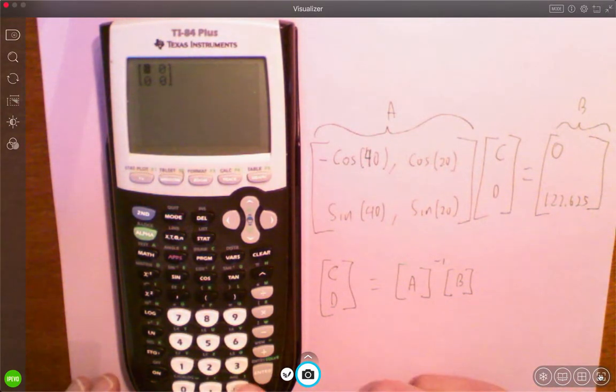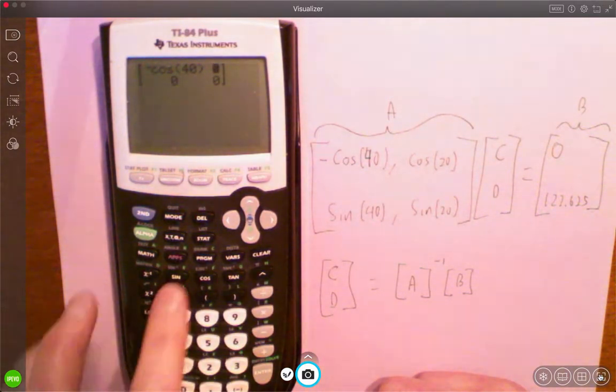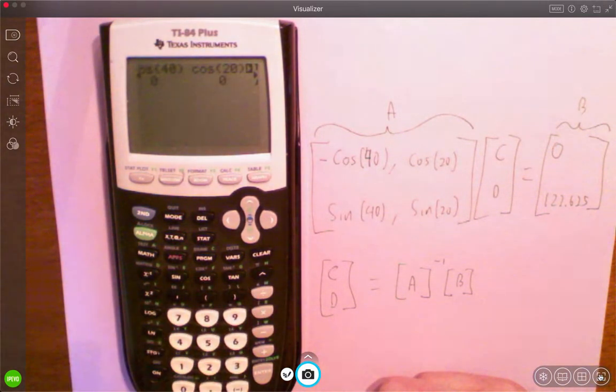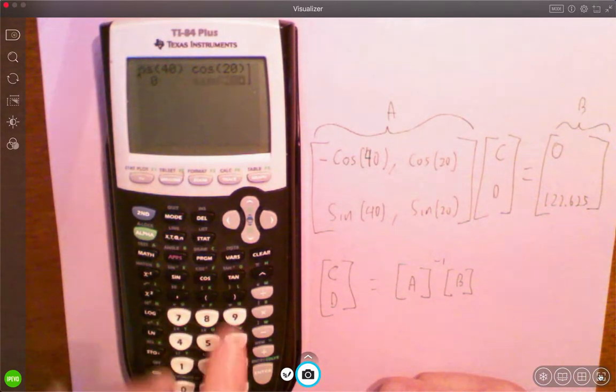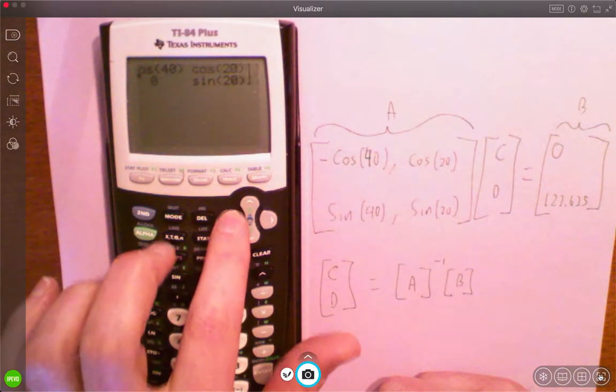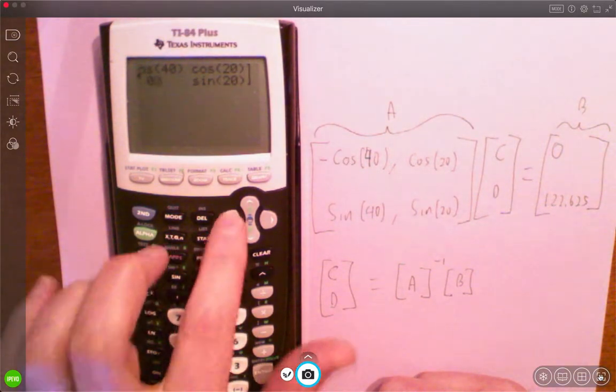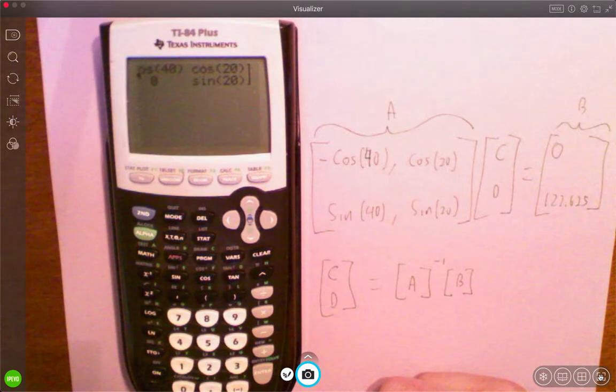And then I can go minus cos, you know, you double check that you are in degrees. 40, and right arrow, that one's going to be cos 20. So you can just type these in. Down, that one's sine of 20. And then this guy is sine of 40.